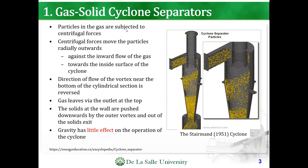Particles in the gas are subjected to centrifugal forces. The centrifugal forces move the particles radially outwards. Because of this, momentum is reduced as particles are being driven against the inward flow of the gas towards the inside surface of the cyclone.